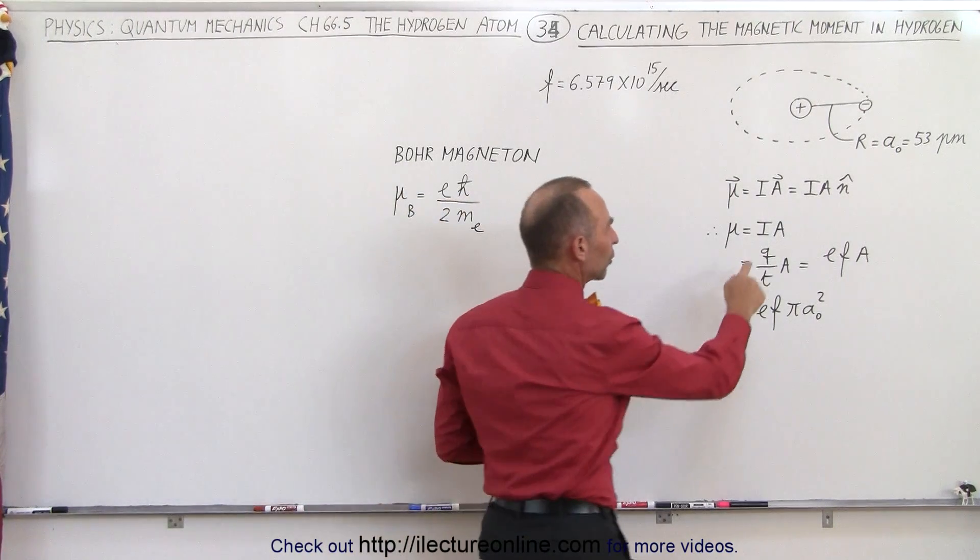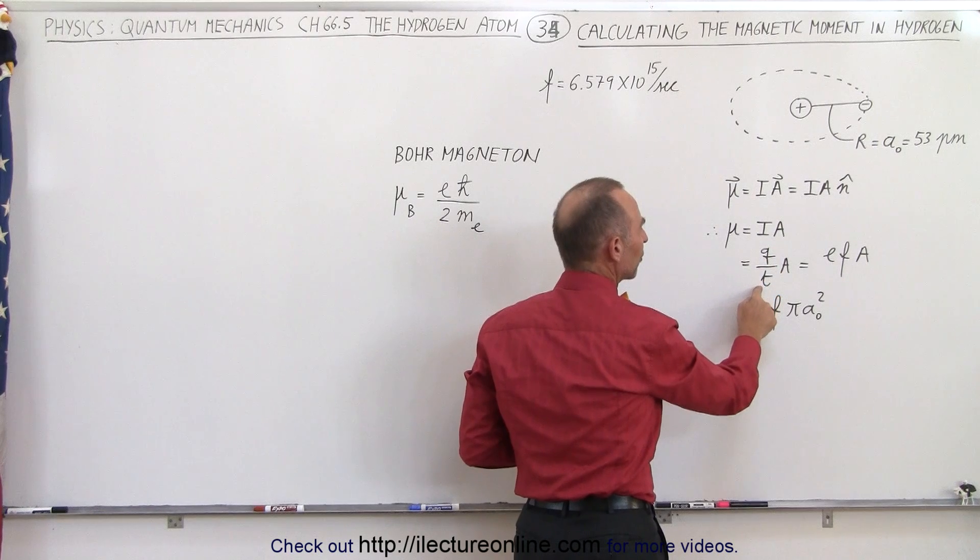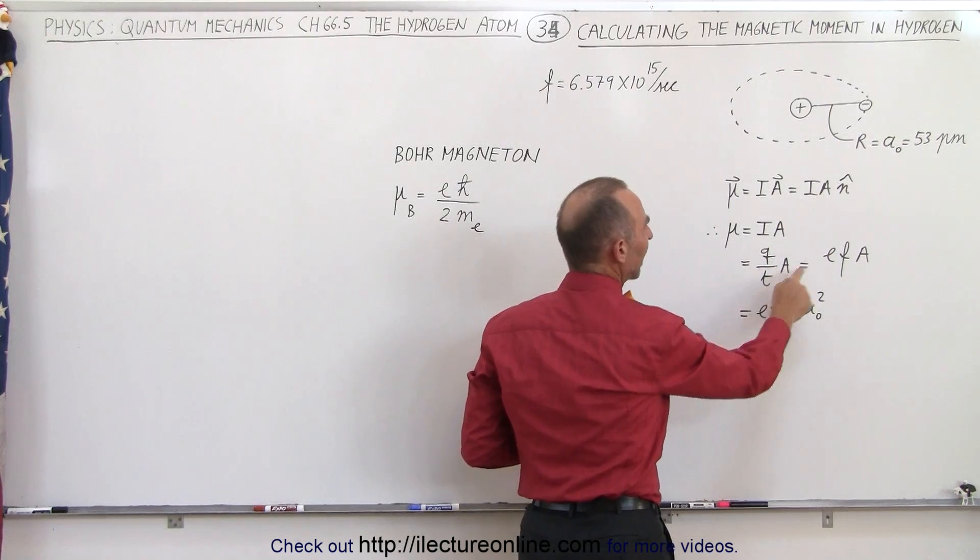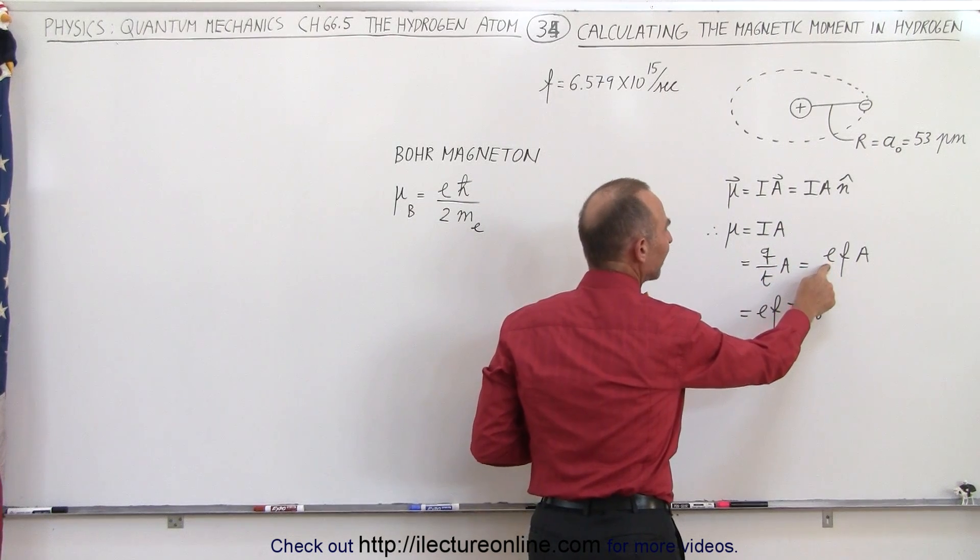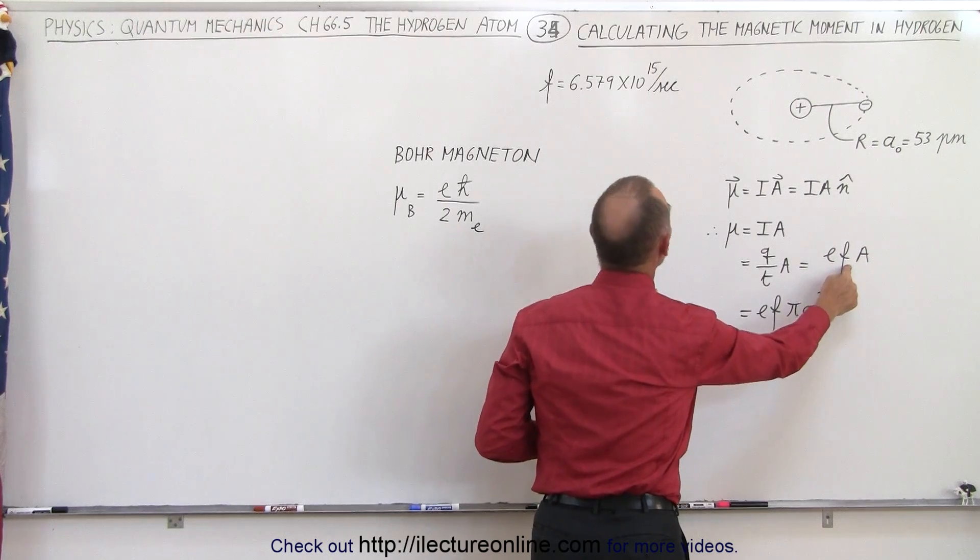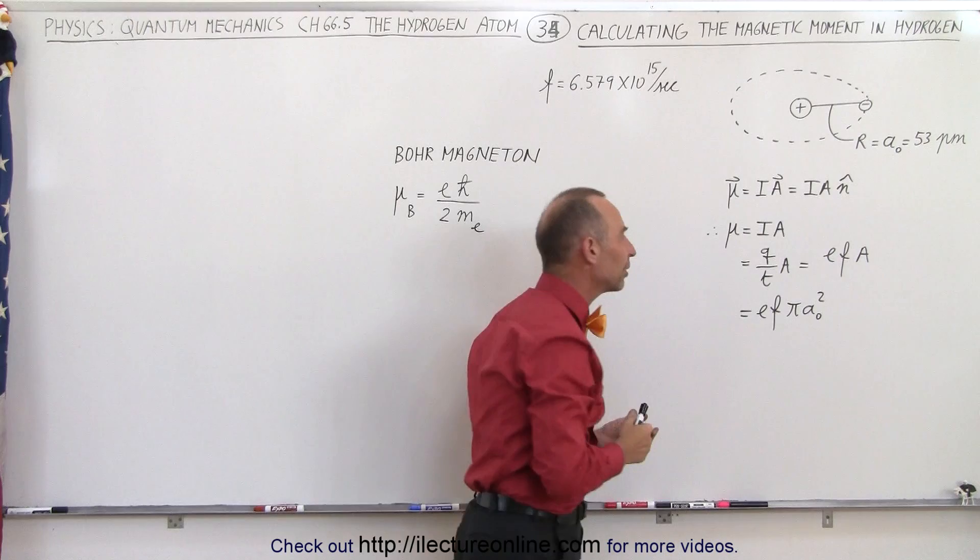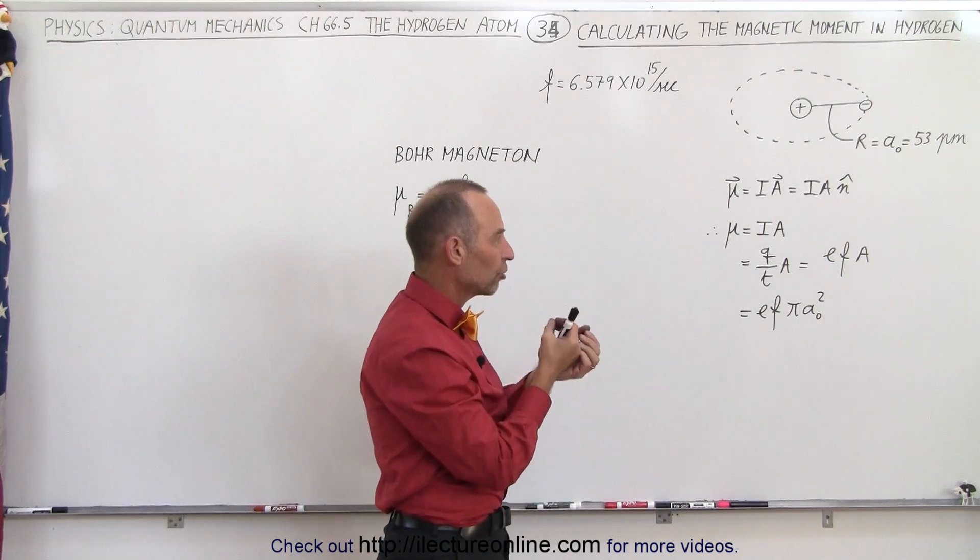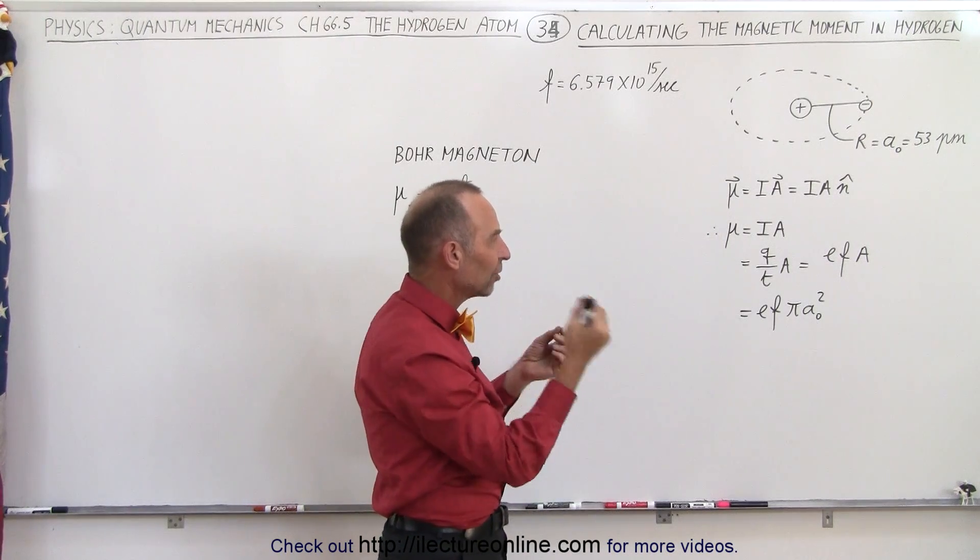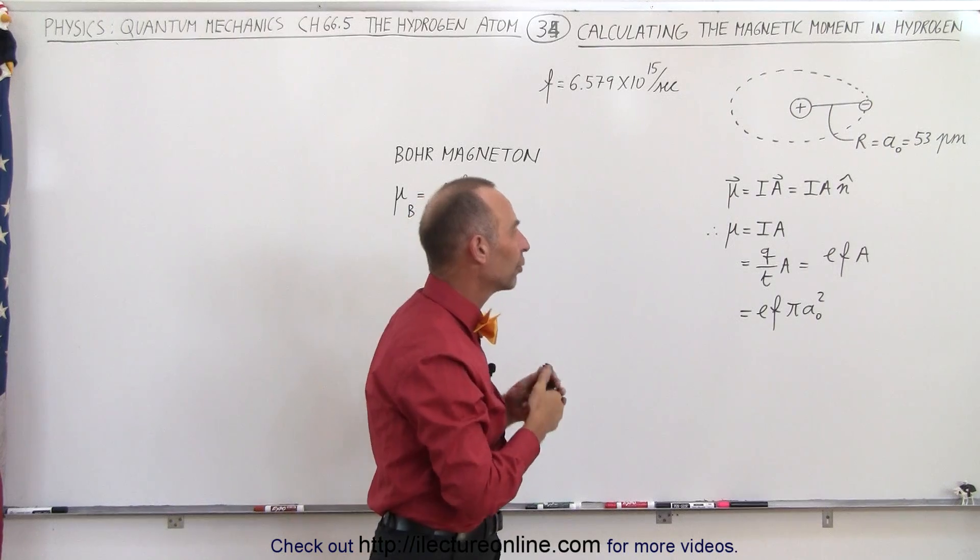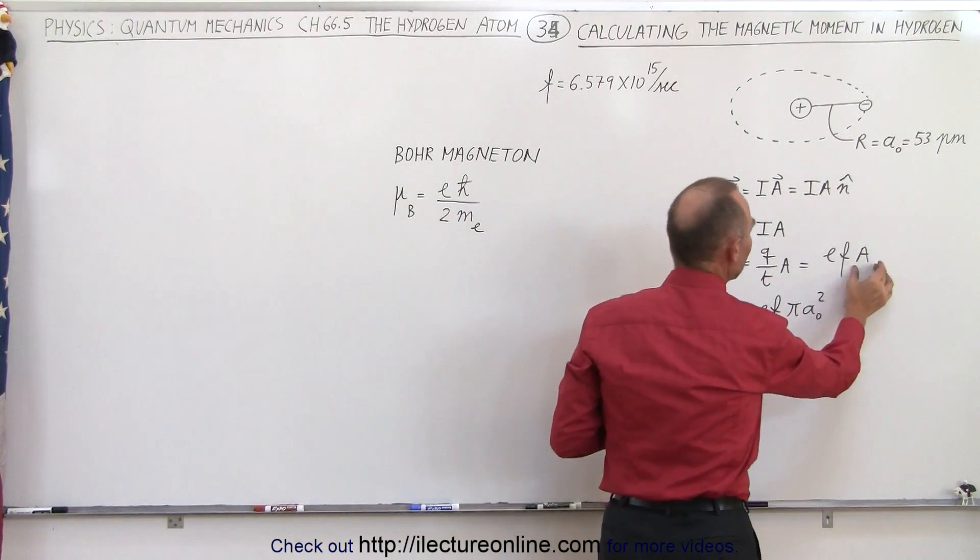So if we then define the current as the amount of charge per unit time, we can define that by the charge of a single electron times the frequency of oscillations, by the number of times that it goes around. So that would be the current. It's the charge of a single electron times the number of times that it goes around, and we're going to multiply that times the area.